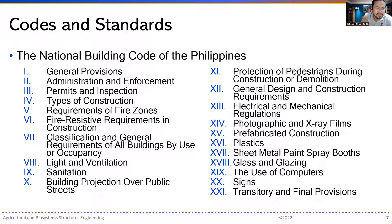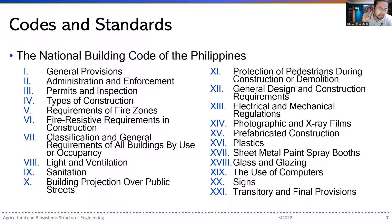There is also light and ventilation — in other countries this is a very critical aspect; they even have different codes for light and ventilation separately. You have sanitation, building projection over public streets, protection of pedestrians during construction or demolition, general design and construction requirements, and electrical and mechanical regulations.